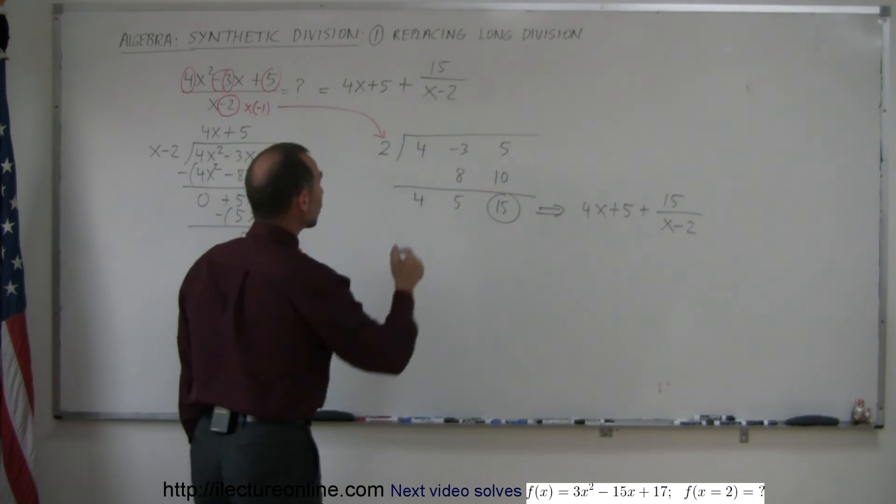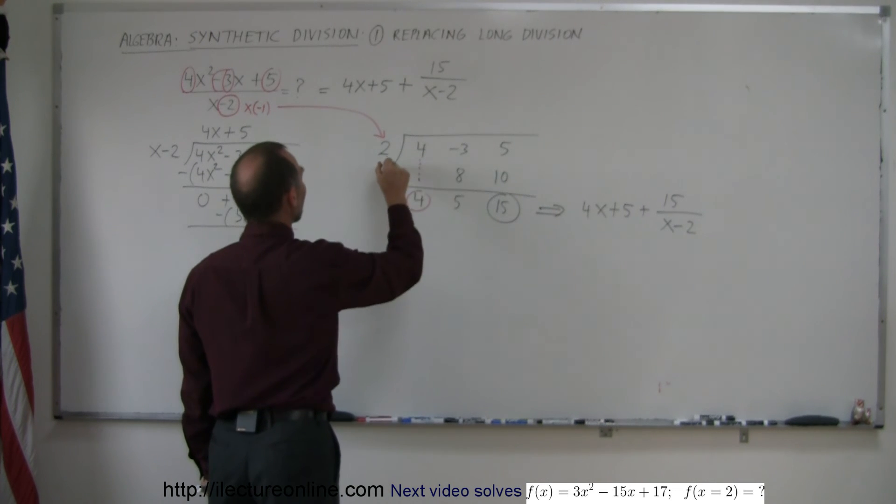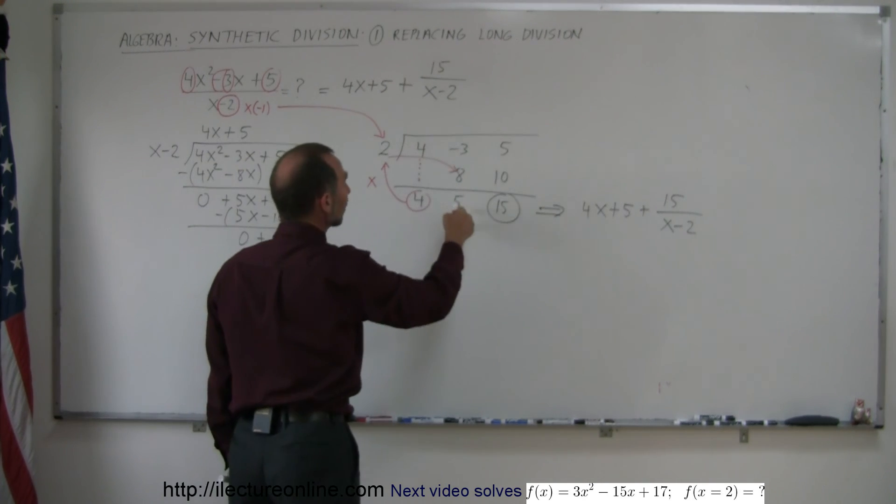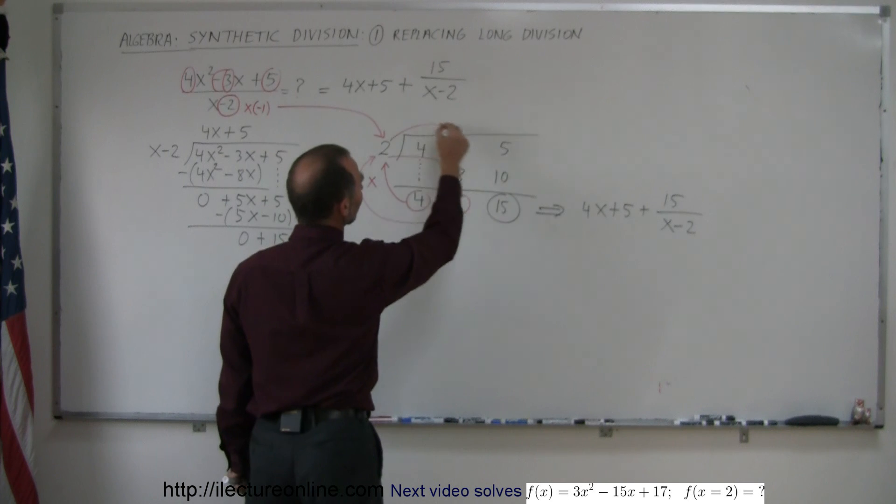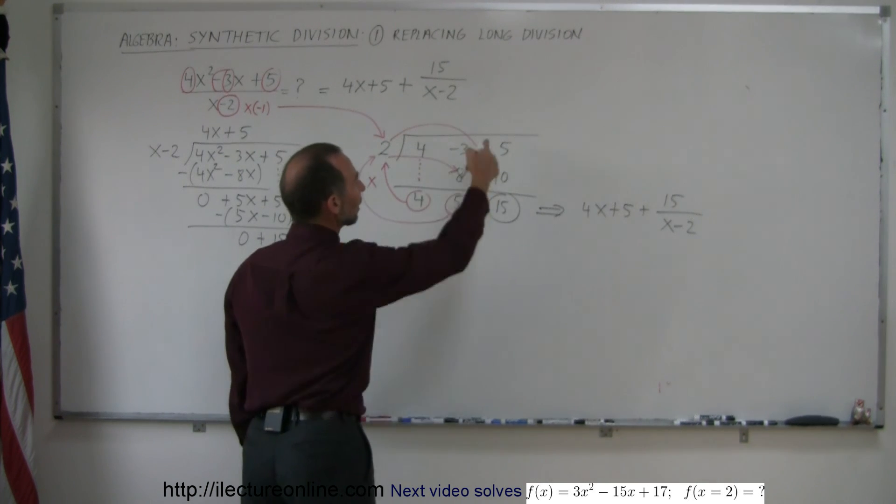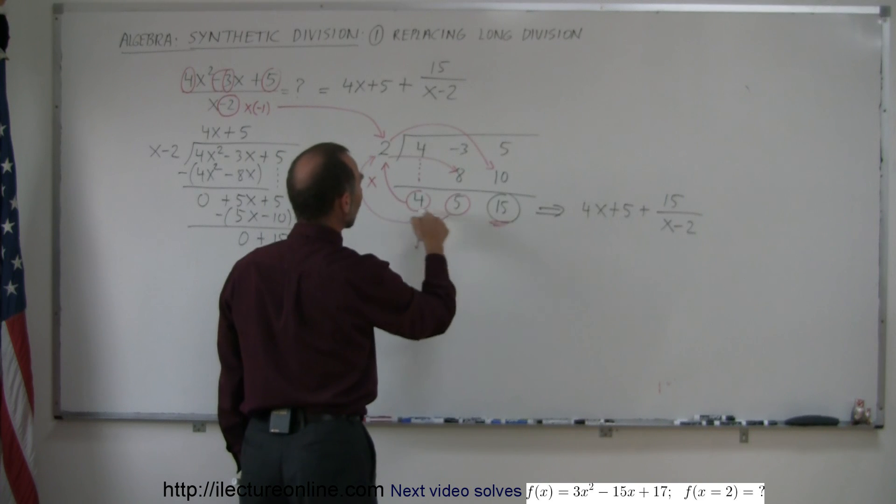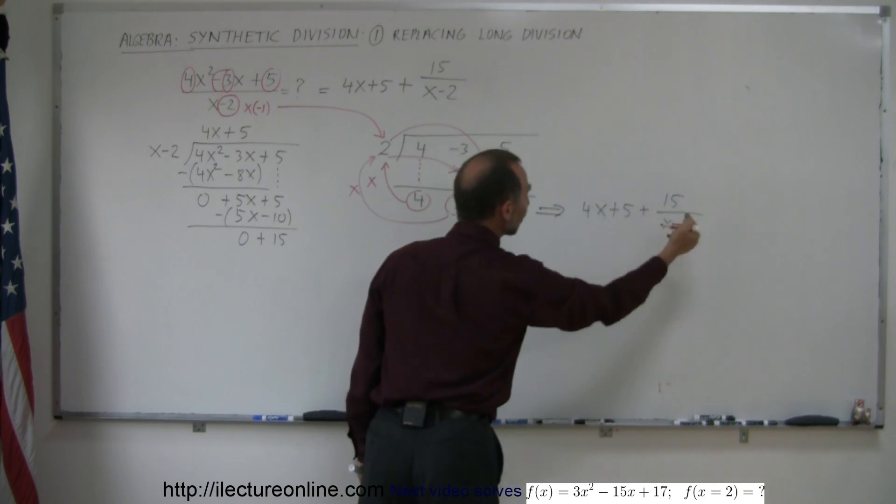Then the next thing you do is you drop the 4 down. And you take the 4 and you multiply it times the 2. And you place that over here. That becomes an 8. And then you simply add the 2 together. We get 5. And then you take the 5. And you multiply that times the 2. You get 10. And you place that over here. You add them together. And then you're done. Here's your remainder. And these are the coefficients of the 4x plus 5. And the remainder of 15 over x minus 2.